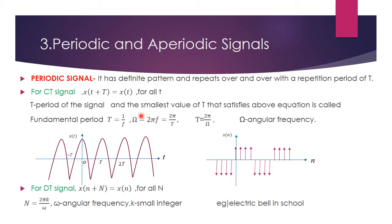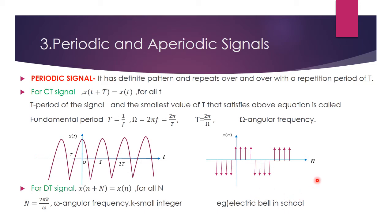So T = 2π/ω for continuous time signals. For discrete time signals, the condition is x(n + N) = x(n), and N = 2πk/ω, where ω here is the digital omega. This is the graphical representation for a periodic signal in both continuous time and discrete time — the signal repeats after each interval. The best example is an electric bell in school: after each period, the bell rings, so it is a periodic signal.